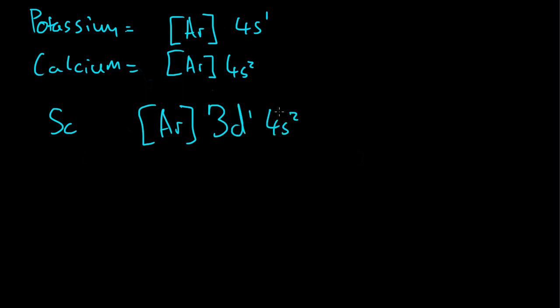We always write the 4s after the 3d, because the 4 energy level is overall higher, so that's why we write it there, even though it's lower in energy. So we have scandium, titanium, which is Ar 3d2 4s2, and vanadium, which is Ar 3d3 4s2.